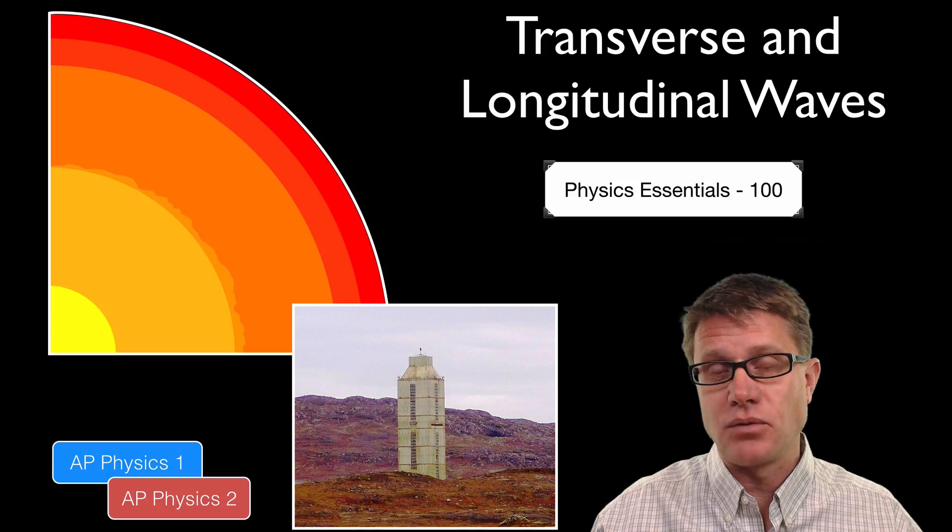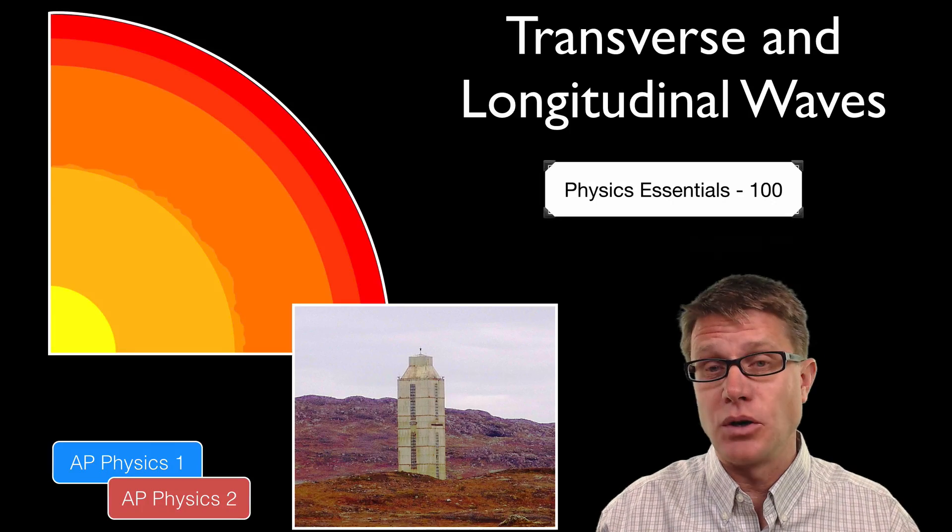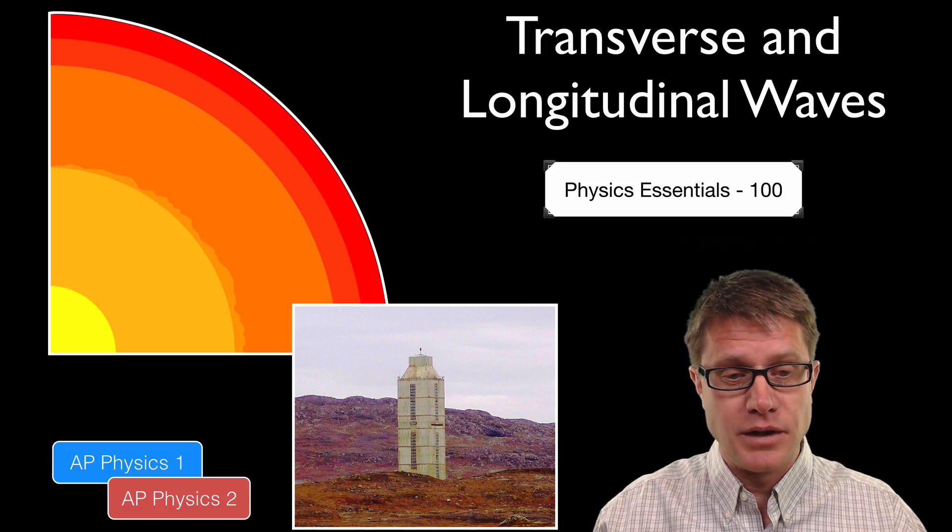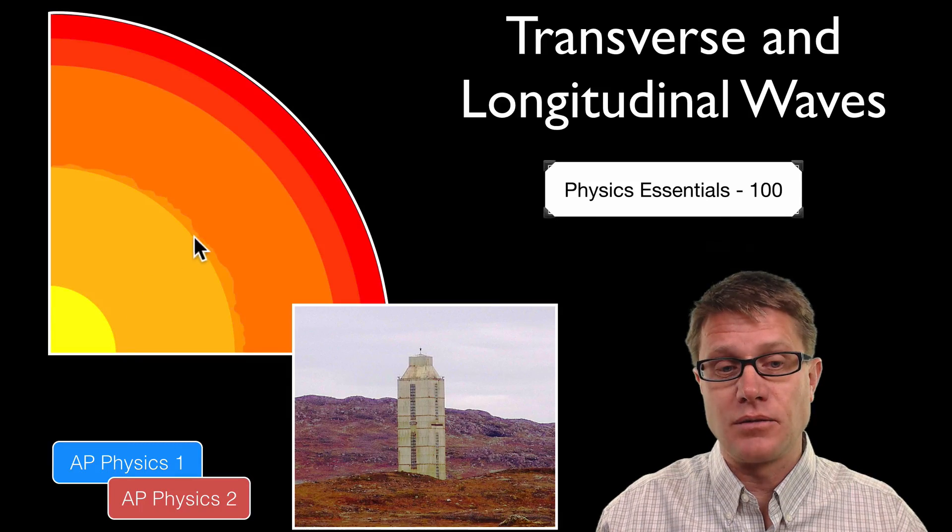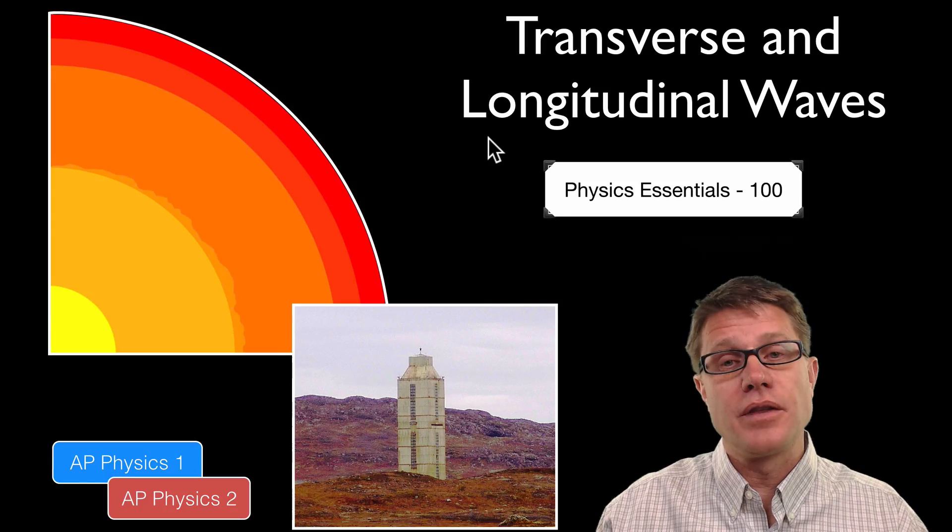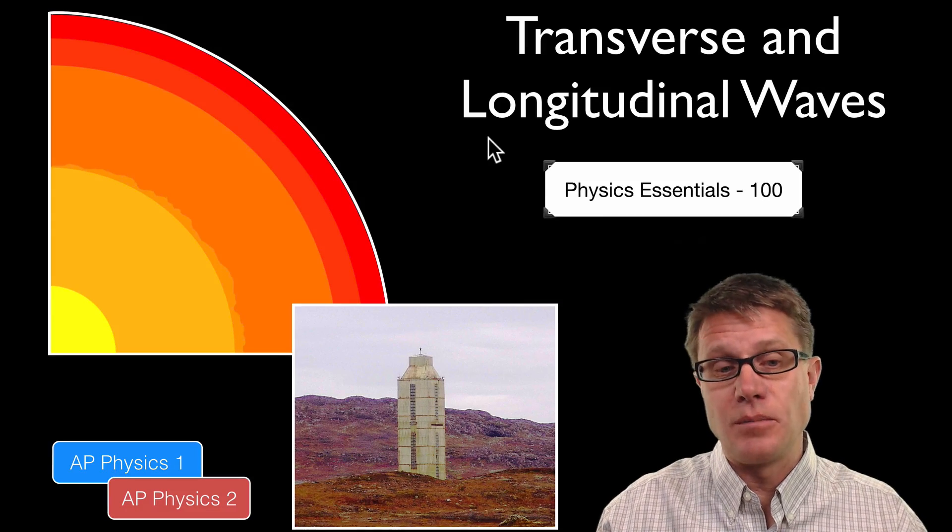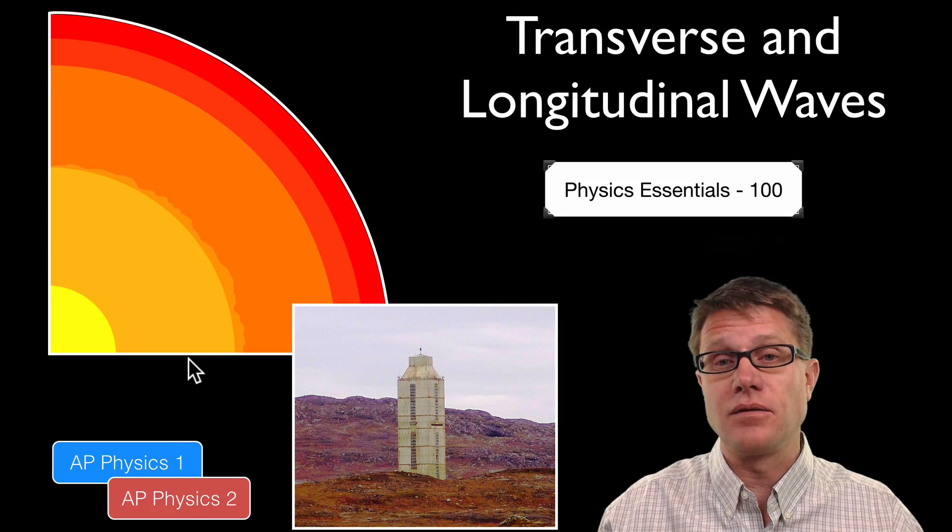Some of those are transverse waves. Those are waves where the oscillation is perpendicular to the motion of the wave. And those ones, like all waves, cannot make it through the solid inner core, but also cannot make it through this liquid outer core. But the longitudinal waves where their oscillation is in the direction of the motion can still move their way through. So we are looking at those waves on the other side of the earth to figure what the inside of the earth looks like.